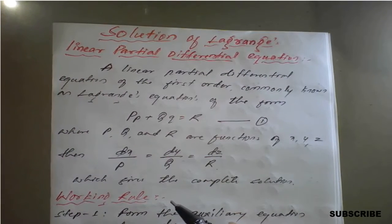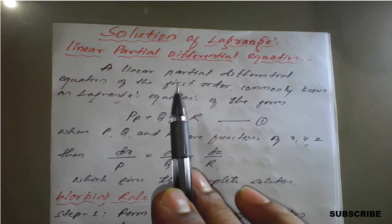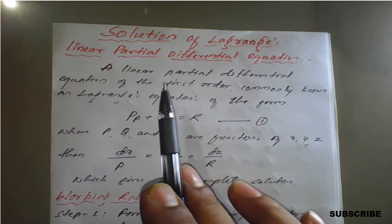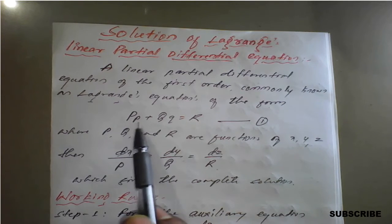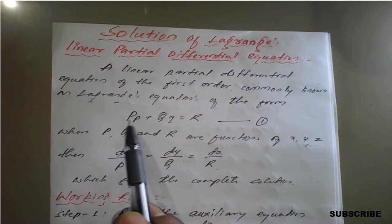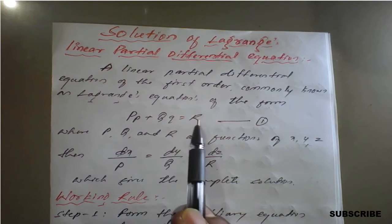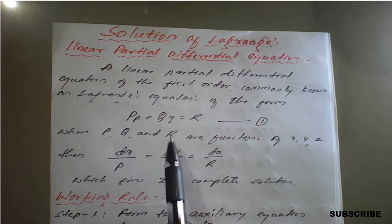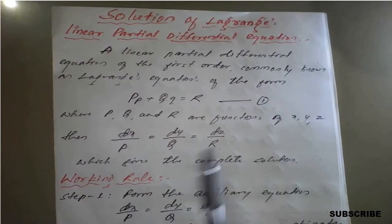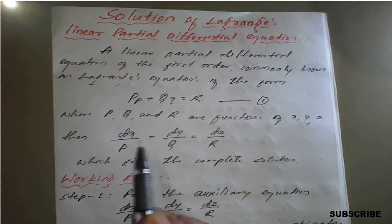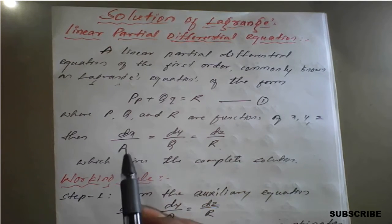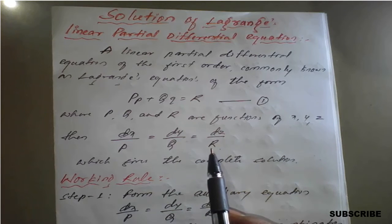Good morning, dear students. Welcome back for the same concept: Lagrange's linear partial differential equation. With a small recall, the standard form is Pp + Qq = R, where P, Q, R are functions of x, y, z. The auxiliary equation for the given Lagrange's linear equation is dx/P = dy/Q = dz/R.